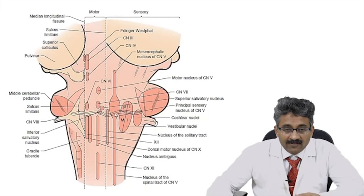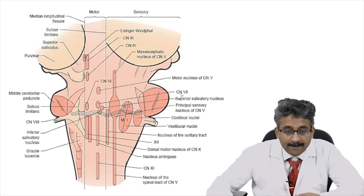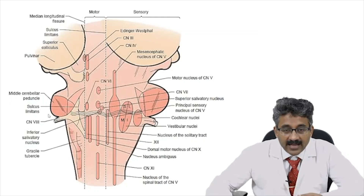The first four are above the level of the pons. This fifth one is the sixth cranial nucleus — abducens — situated in the pons. Then see here the seventh cranial nucleus, and this is the eighth cranial nucleus with its superior, inferior, medial, and lateral components. So these four cranial nuclei — fifth, sixth, seventh, and eighth — are in the pons.